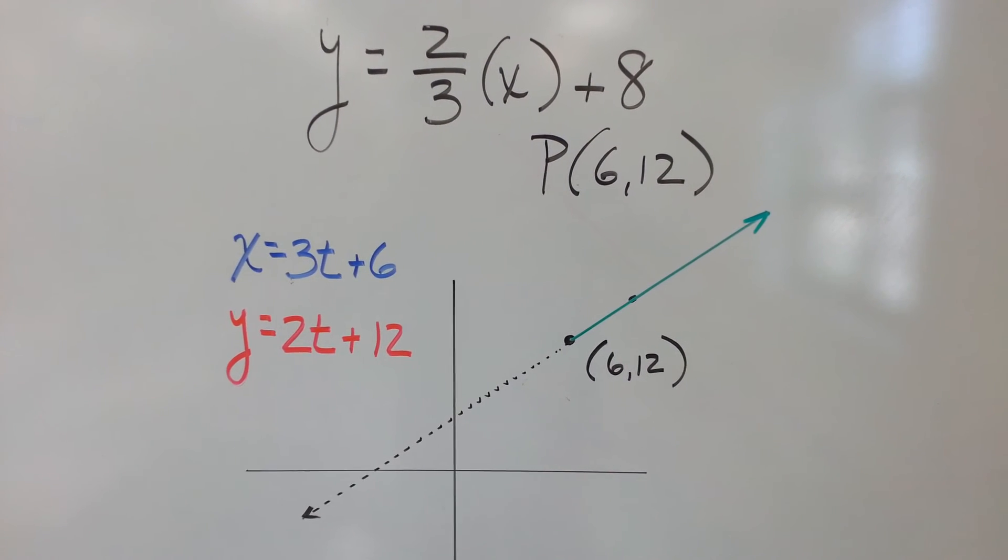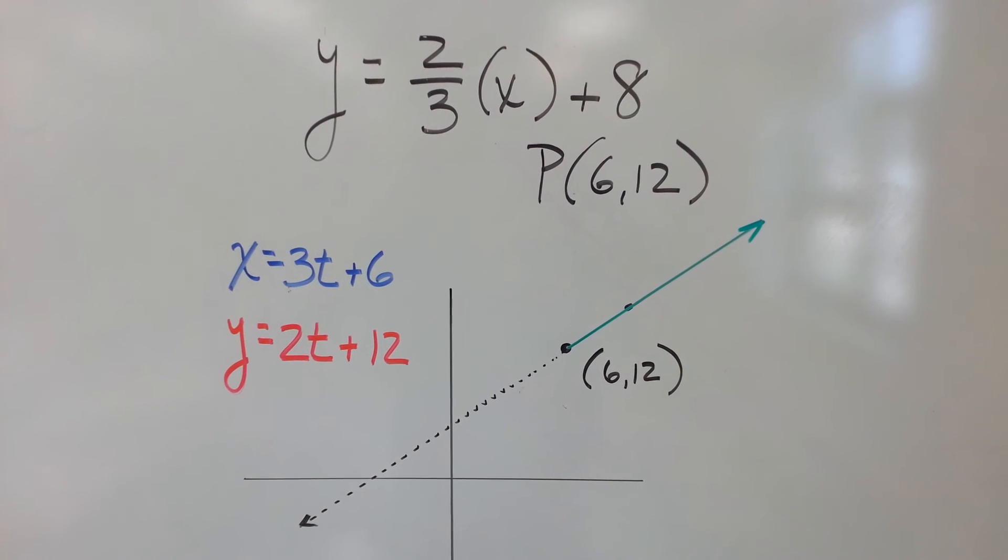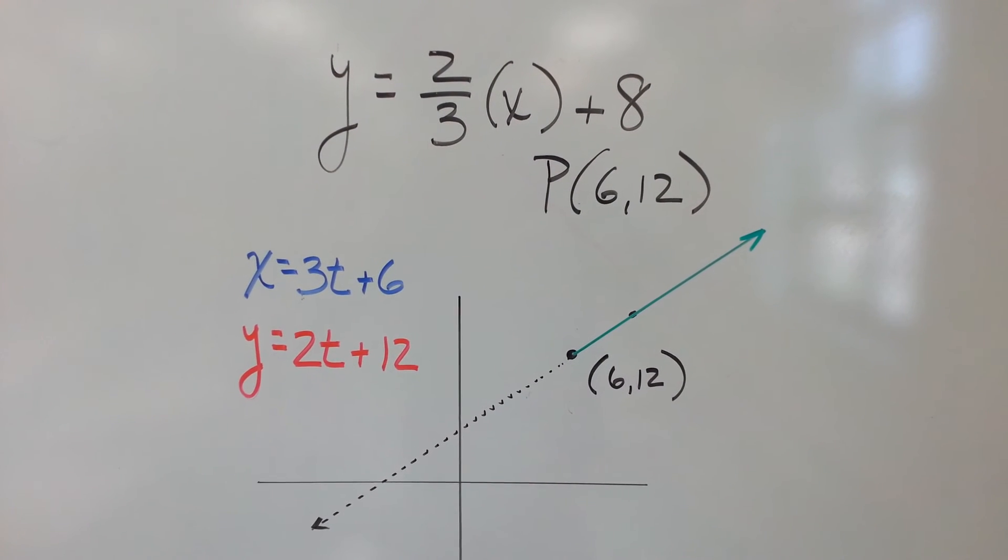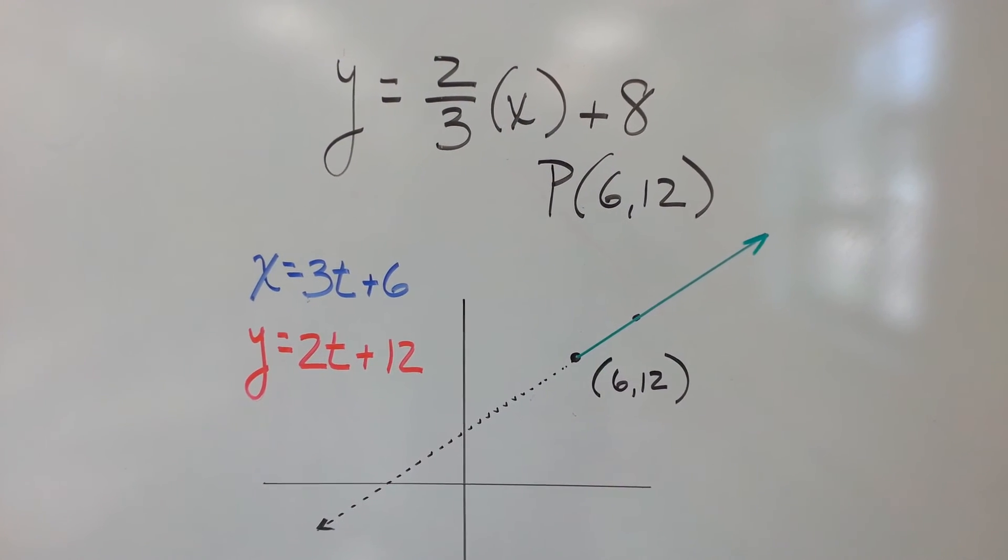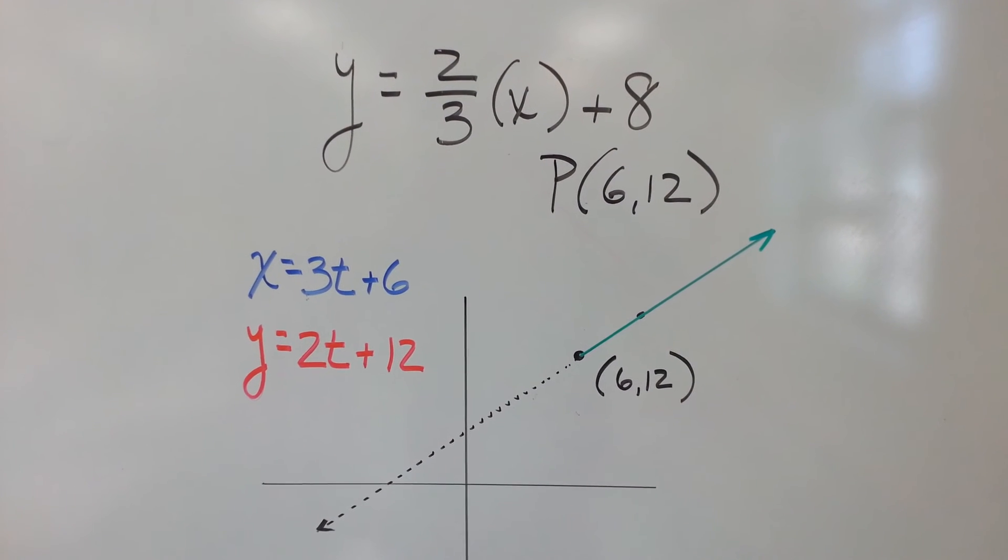At time 0, if I put 0 in for t, where's my x? It's at 6. Where's my y? 12. Hey, that's the starting point, (6,12).